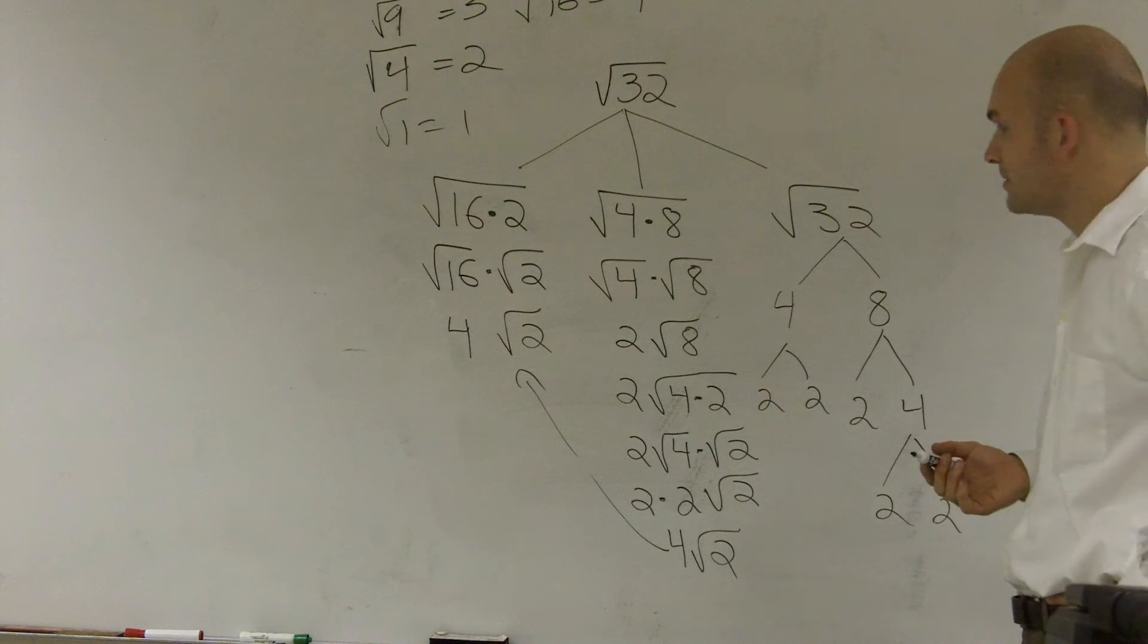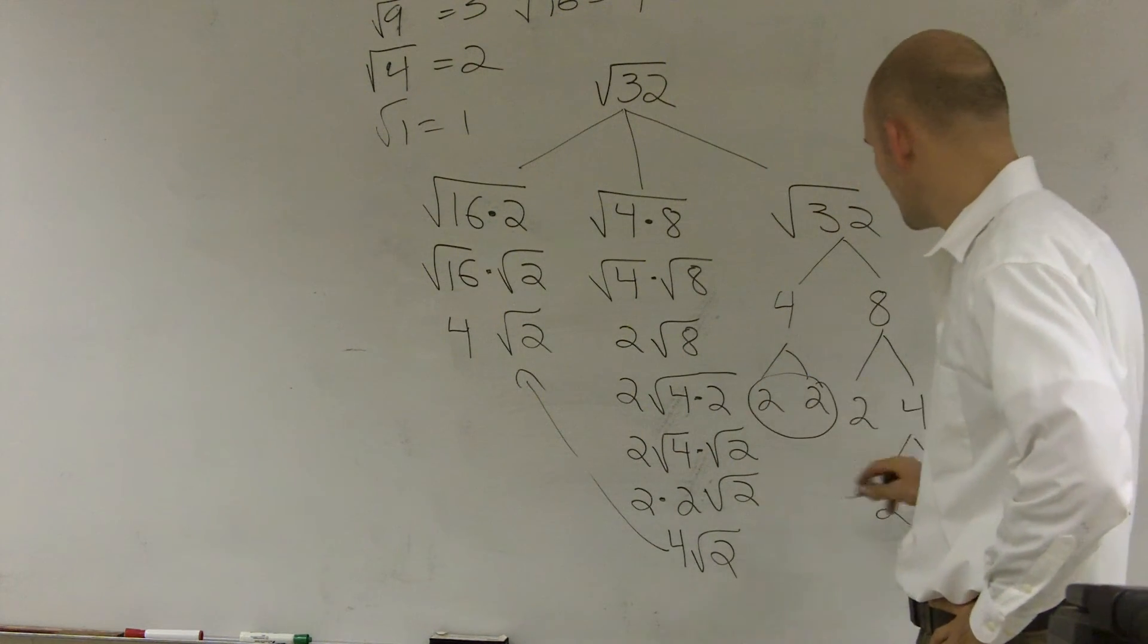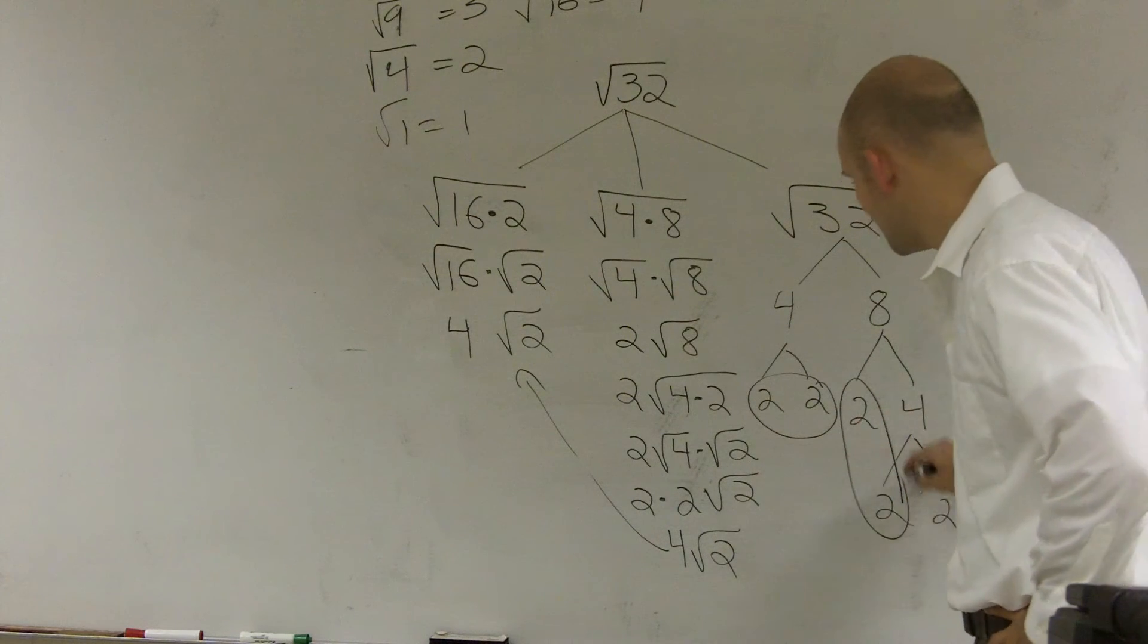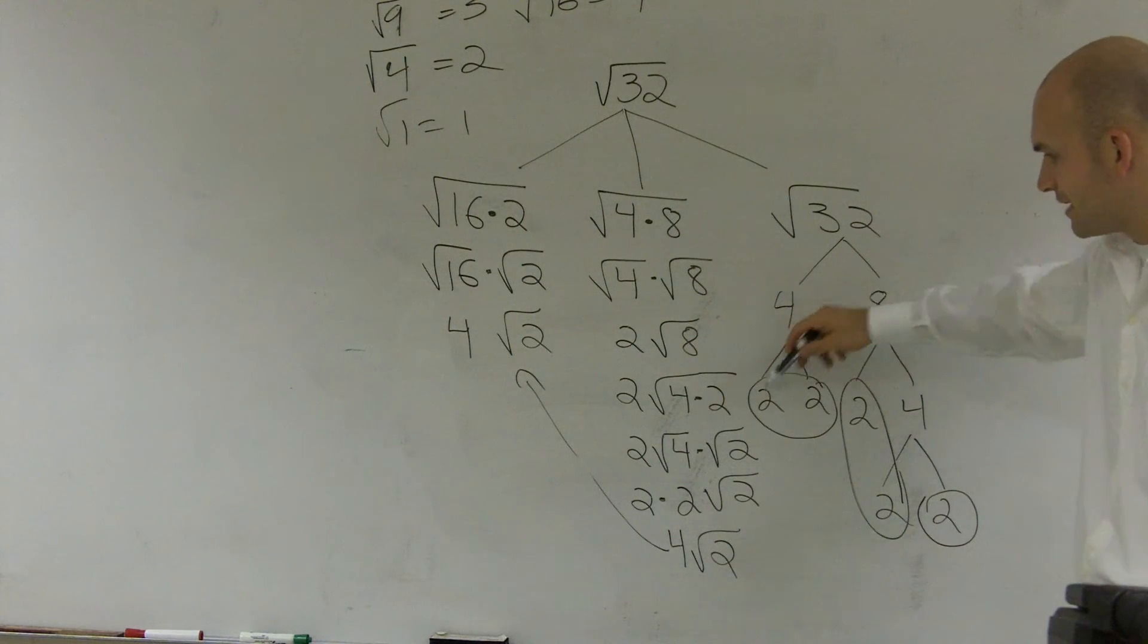So then what we do is we group them, and we take those out. So we say, I have these two, and then I have these two. So what I have left is one extra 2. So whatever is extra still stays under your radical. But whenever you have two of them combined, remember the square root of 2 times 2 is equal to 2, right?